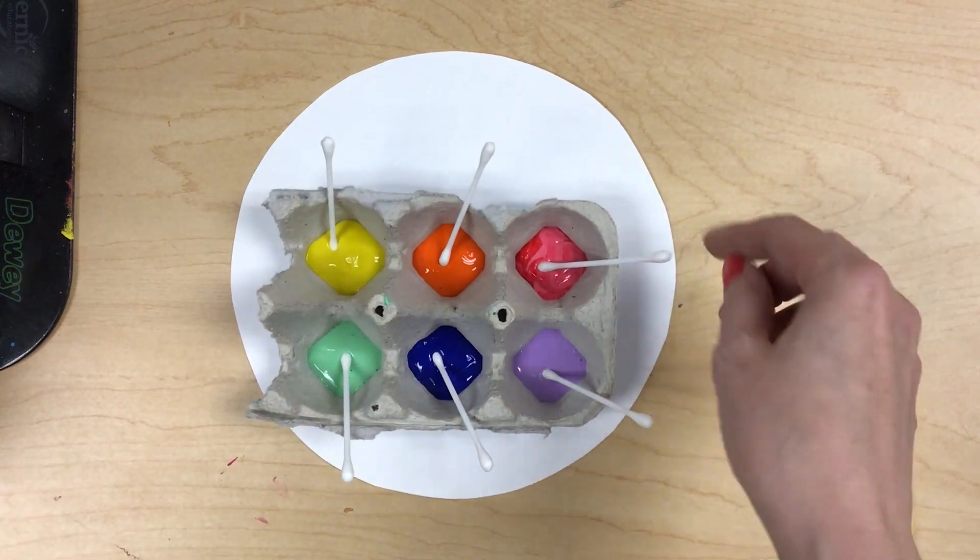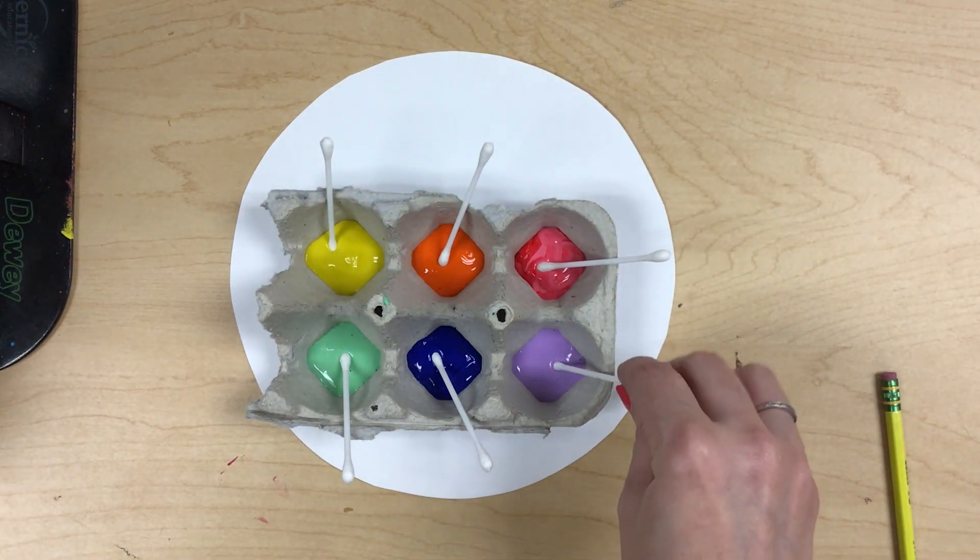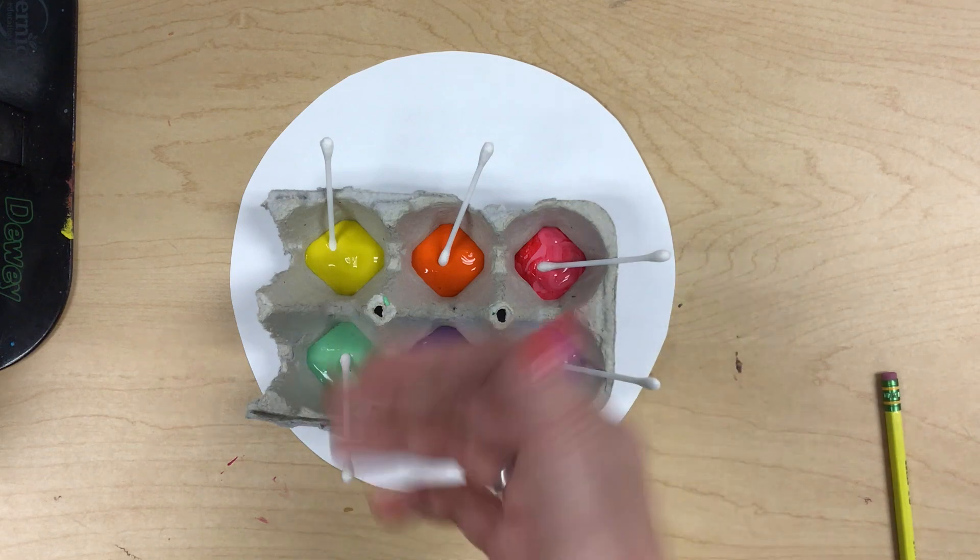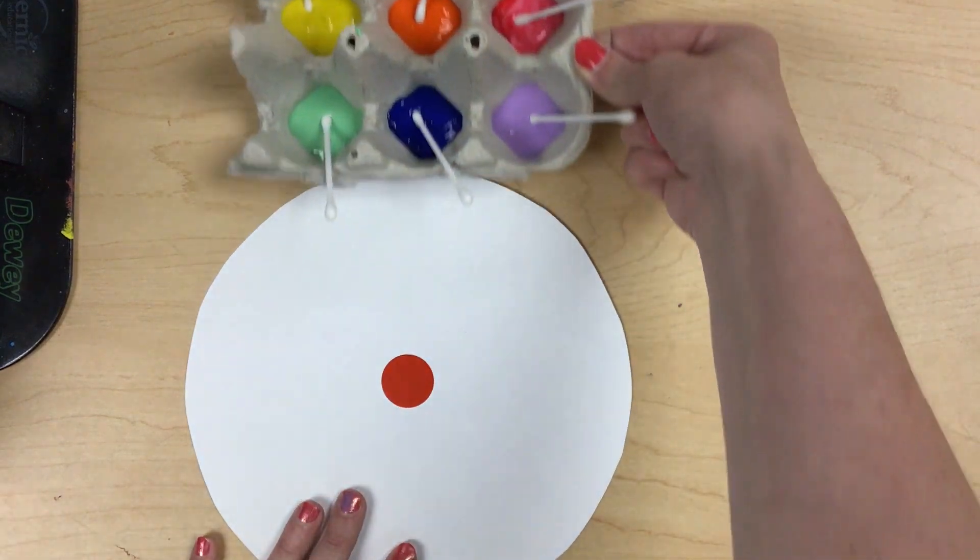Your table is going to get six choices of colors. Each has a Q-tip inside. So I can pick one to start with and I can use a couple, I can use all of them. It's up to me.